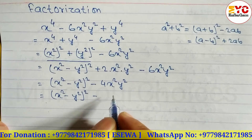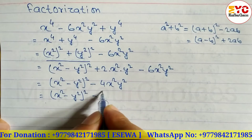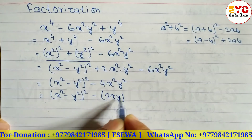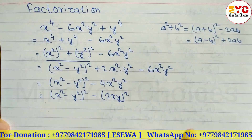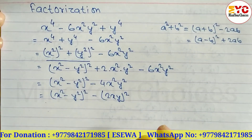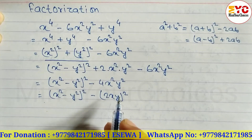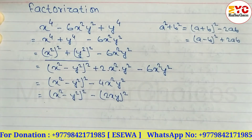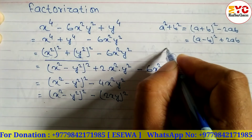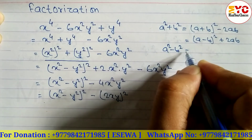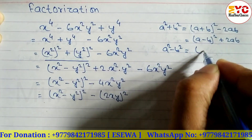Now let's convert 4x squared y squared into a whole square: we can write it as 2xy whole square. So the expression becomes x squared minus y squared whole square minus 2xy whole square. You can see this is now in the form of a squared minus b squared.